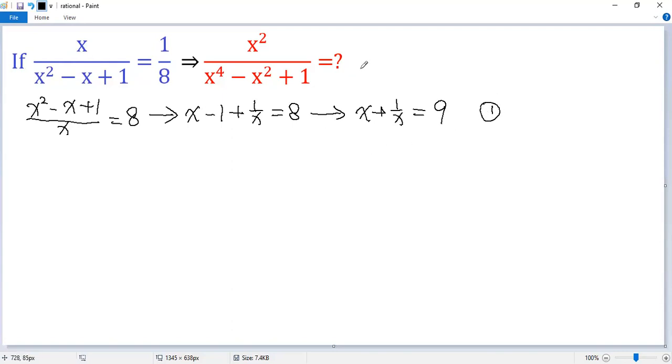Now, we consider the reciprocal of the target expression. x to the power of 4 minus x squared plus 1 over x squared equals x to the power of 4 over x squared, which equals x squared. The middle term is minus 1. The last term is 1 over x squared.